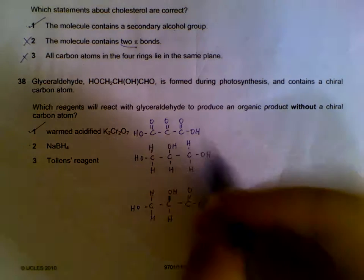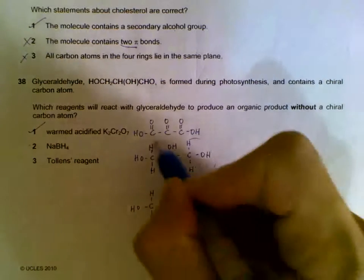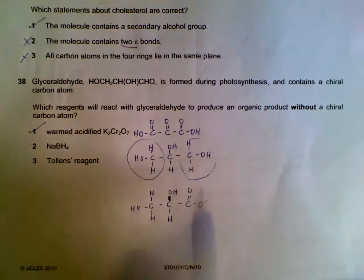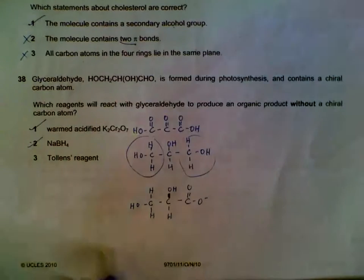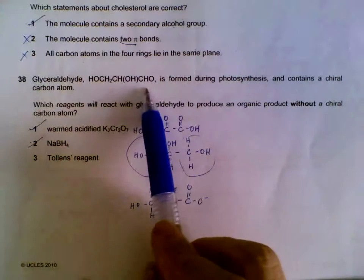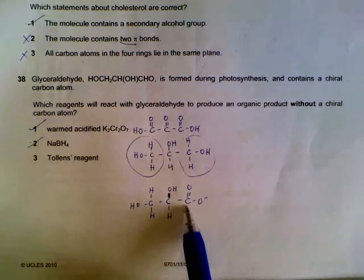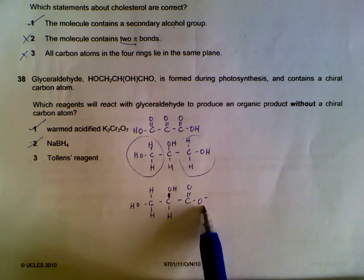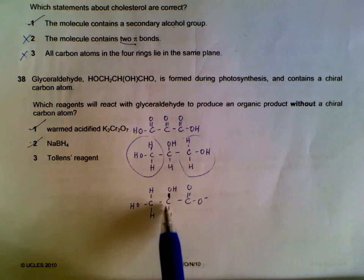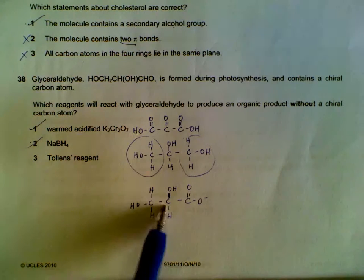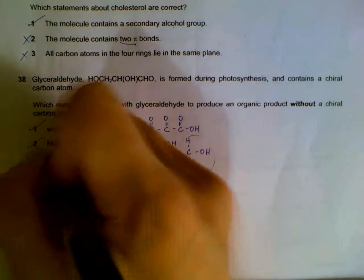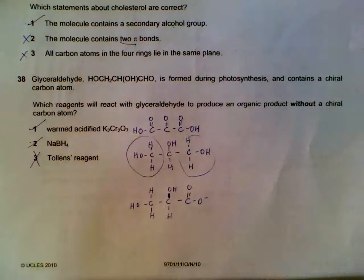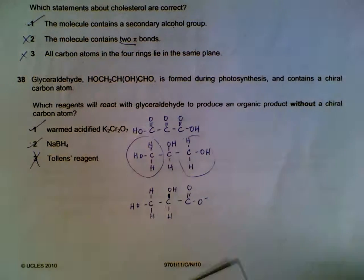If you're wondering about this carbon, it's joined to the same groups here and here, so no carbons are chiral. Tollens reagent will react with your aldehyde group. You get COO-. And then your chiral carbon will be here. It's joined to four different groups. So this one will have a chiral carbon. So one and two are the choices.